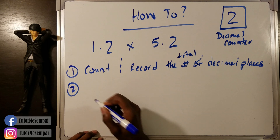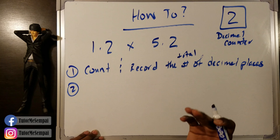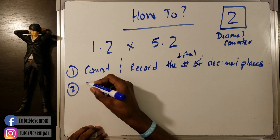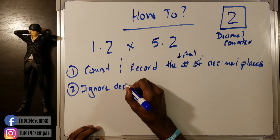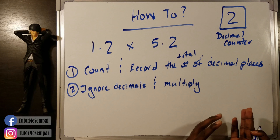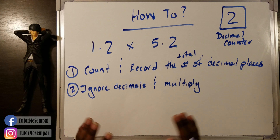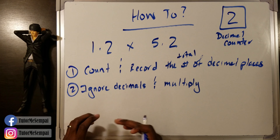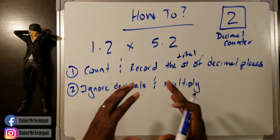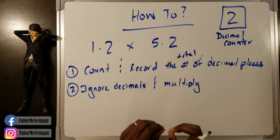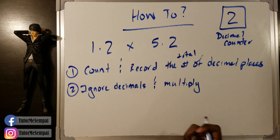Second step: ignore decimals and multiply. Simple as that — ignore all your decimals and multiply your number. Now you might be asking how are we going to multiply decimals if we're ignoring the decimals? Don't worry, we handle that in the third step. Once you finish multiplying your numbers without the decimals, we're going to use our decimal counter to put the decimal in the correct spot.